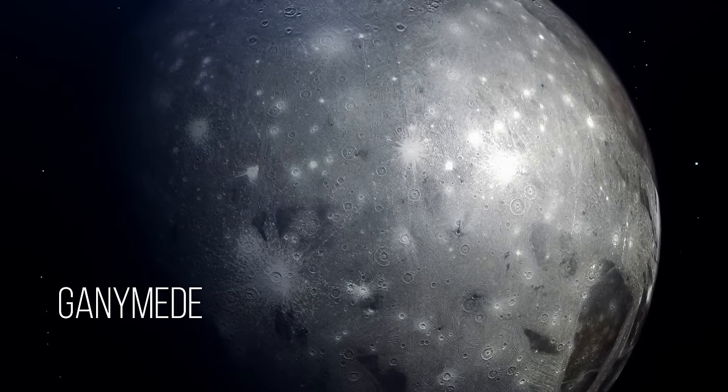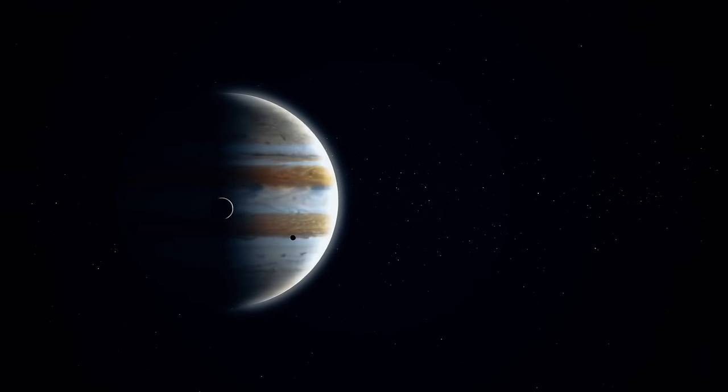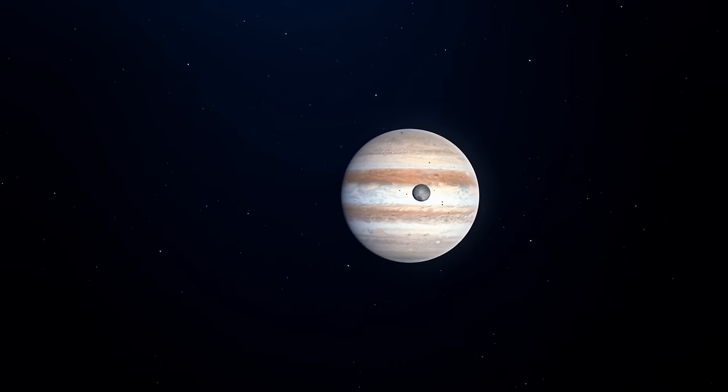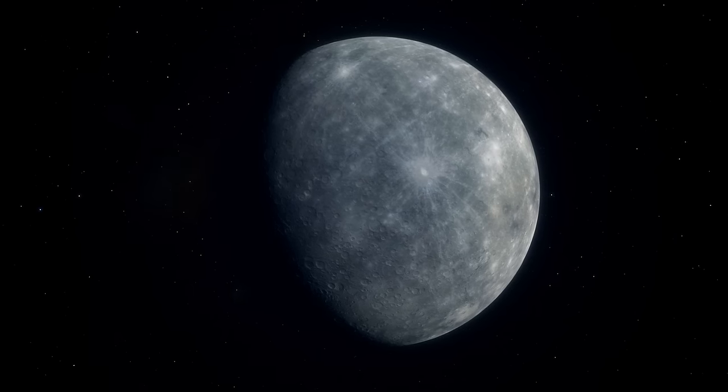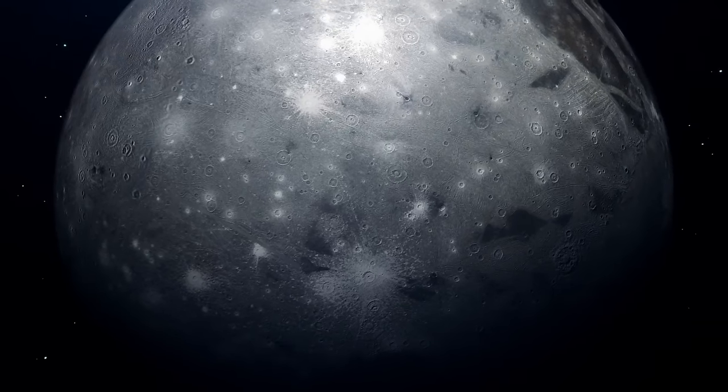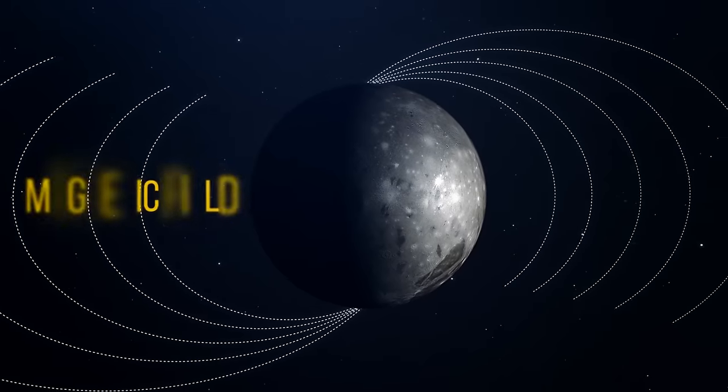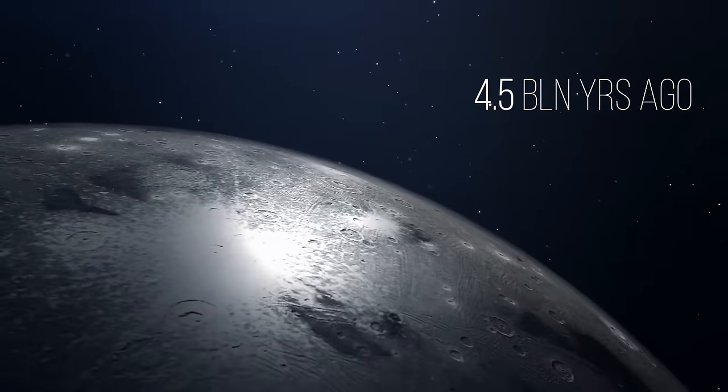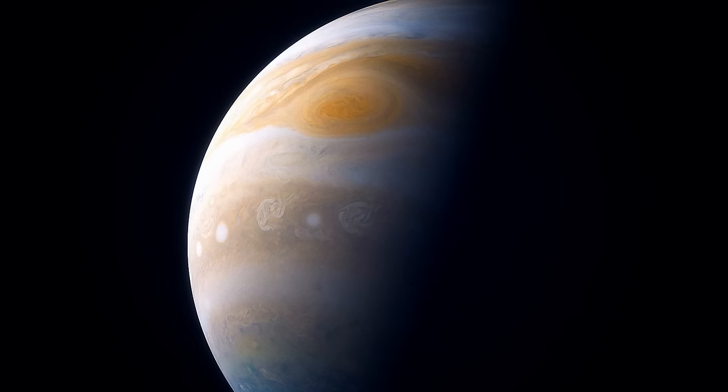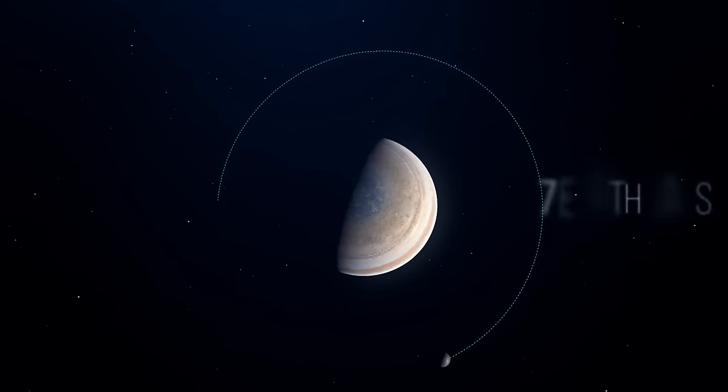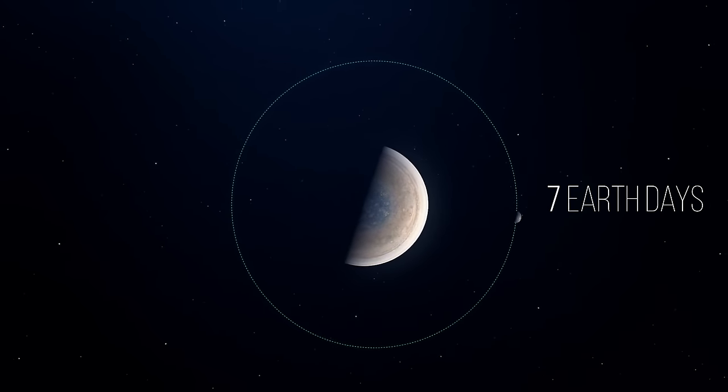Ganymede is Jupiter's largest moon and the biggest moon in our solar system. If this space body didn't orbit around Jupiter, it would be classified as a planet. It's even bigger than Mercury and Pluto. What makes this moon stand out among others is the fact that it has its own magnetic field. The moon was born around 4.5 billion years ago. It means it's as old as Jupiter itself. This planet-sized space body takes seven Earth days to orbit its planet.